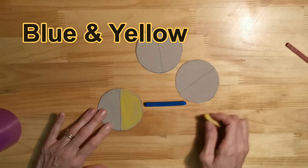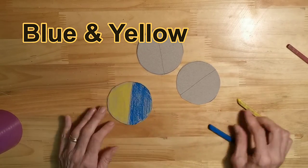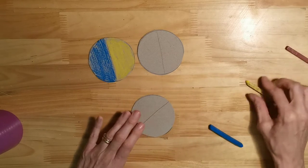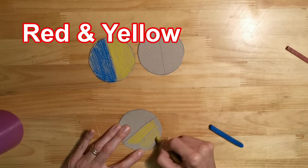This first one here I'm colouring half yellow and half blue, so I've got blue and yellow. Now I'm going to colour yellow and I'm going to colour red.